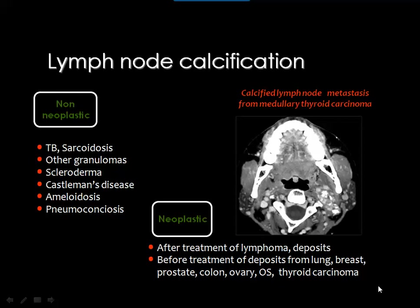Calcified nodes are usually considered post-inflammatory, but some neoplastic nodes may contain calcium. Common inflammatory causes of nodal calcification include TB, sarcoid, pneumoconiosis, amyloid, scleroderma, other granulomas, and Castleman disease. Neoplastic nodes with calcium come from medullary thyroid carcinoma, pulmonary metastases, prostate, colon (especially mucinous adenocarcinoma), and in cases of lymphoma or metastatic nodes after treatment, calcification may indicate a process of healing.